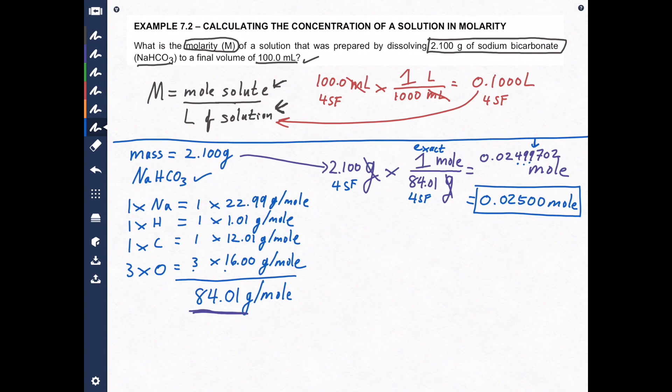Now, all we have to do now is put the moles over the liters. And we have molarity. So one final step. Molarity equals mole solute divided by liters solution. And here we go. 0.02500 mole divided by 0.1000 liters. Grab your calculator if we need to. Divide it by 0.1 equals 0.2500 mole per liter.